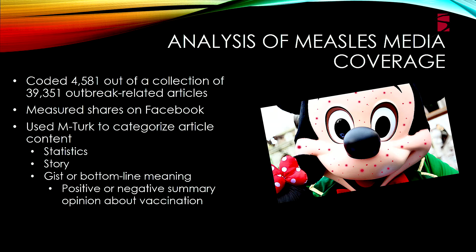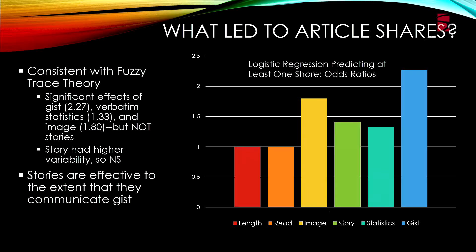Controlling for article length and readability, having a vivid emotional image increased sharing, as did having a story — though that wasn't significant due to variability. Statistics and gist also increased the probability of sharing. Stories were effective to the extent they communicated gist — explaining a causal connection — so stories were effective because they convey gist.